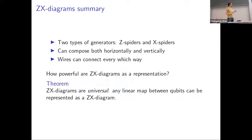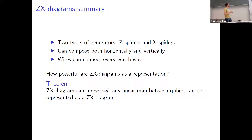Summary: we have two types of generators — Z spiders and X spiders — that can be composed horizontally and vertically. Wires can connect anywhere we want; we only care about which things are connected, not how they are ordered in space. ZX diagrams are universal: they can represent any linear map between qubits — not just unitary maps, but any linear map. So this is a more powerful and general notation than quantum circuits.